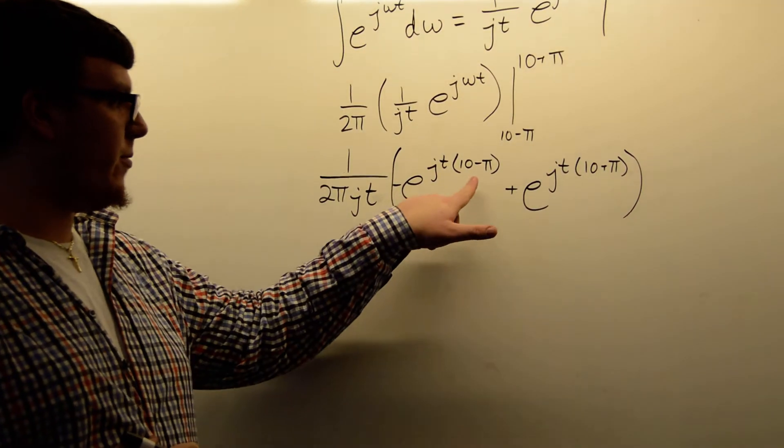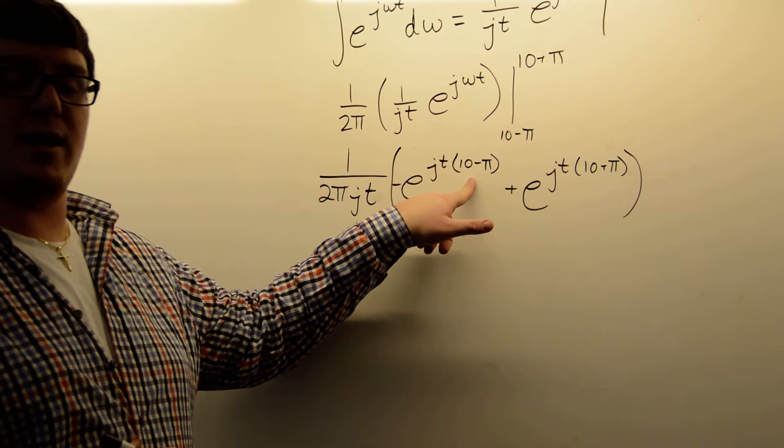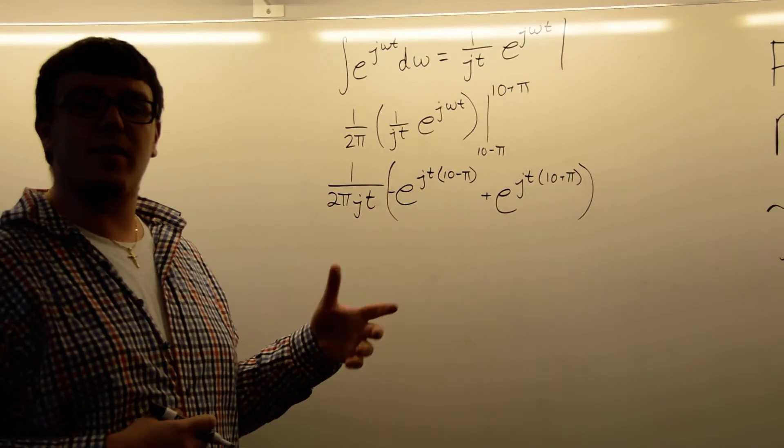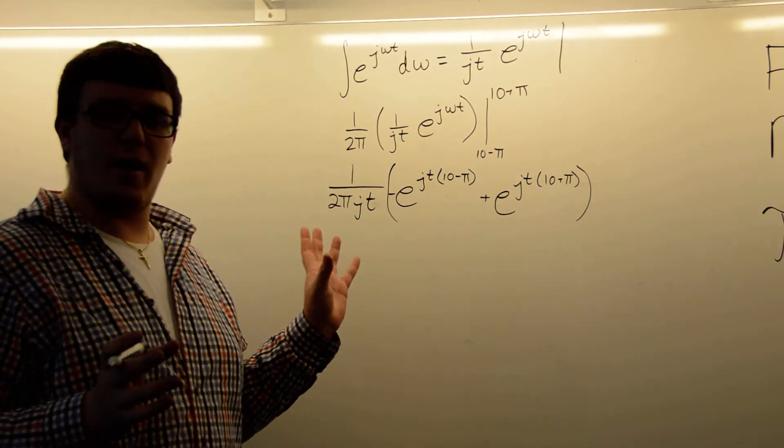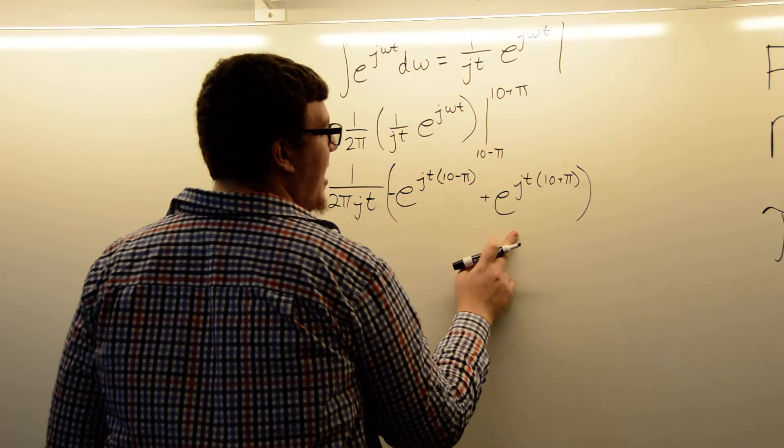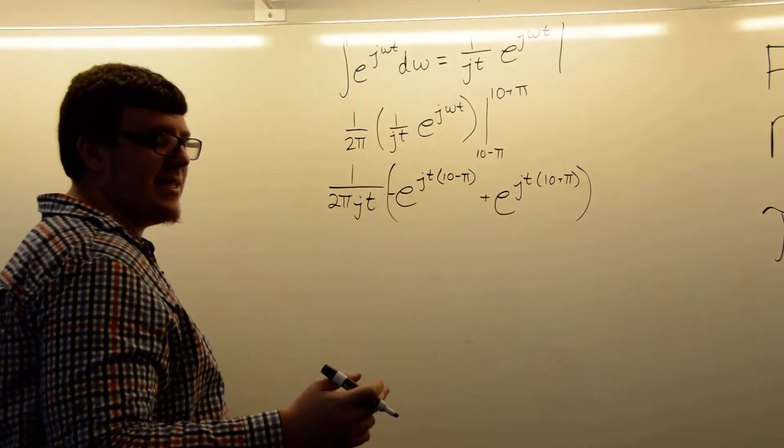Now, both of these, we know that if we have a summation or a subtraction in an exponent, that it's just two of those functions multiplied by each other. So, therefore, each of these has an e to the j10t in it.